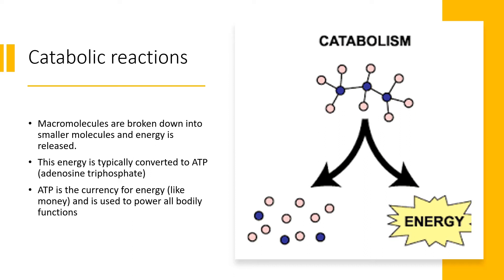Now that we've finished describing the building blocks, let's talk about catabolic reactions. In catabolic reactions, macromolecules are broken down into smaller molecules in order to release energy. This energy is typically converted to adenosine triphosphate, or ATP for short. ATP is the currency for energy — like how the US dollar is the currency for money — and it's used to power all bodily functions. As shown in this picture, a molecule is broken down into smaller molecules and energy is released as a byproduct.